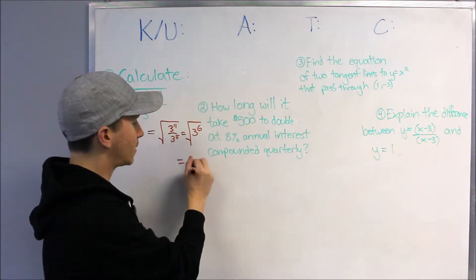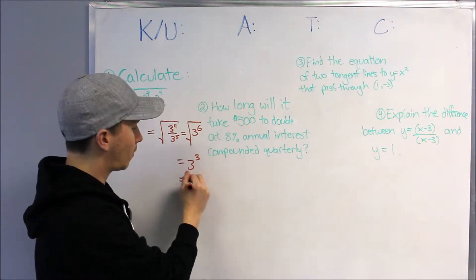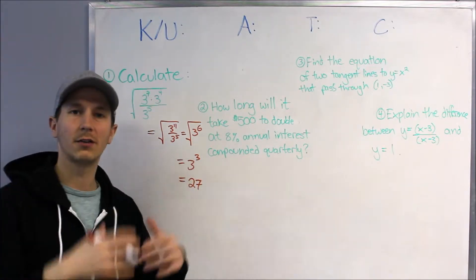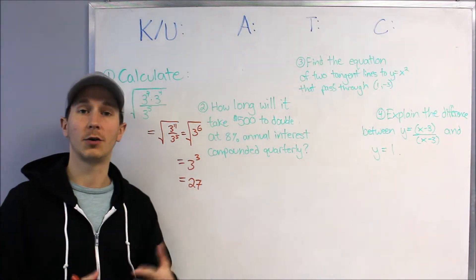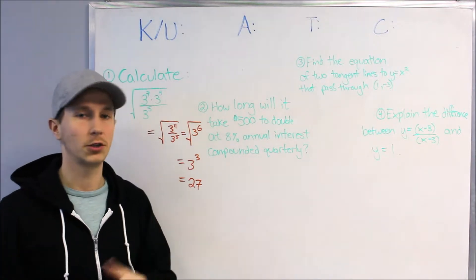The square root is the same as 1 half, so this is the same as 3 to the 3. 3 to the 3 is 27. So it's literally just going through the mathematical operations and showing that you can do that calculation - Knowledge Utilization.